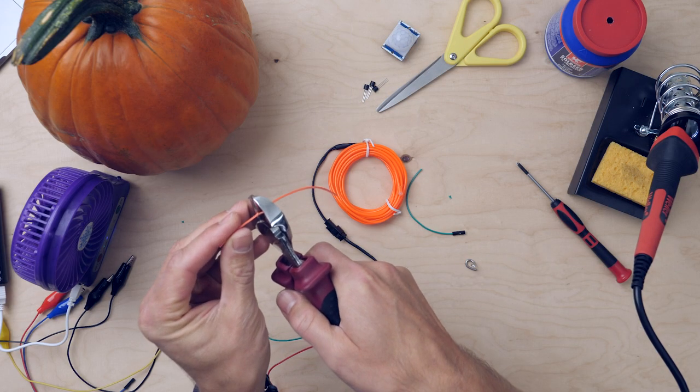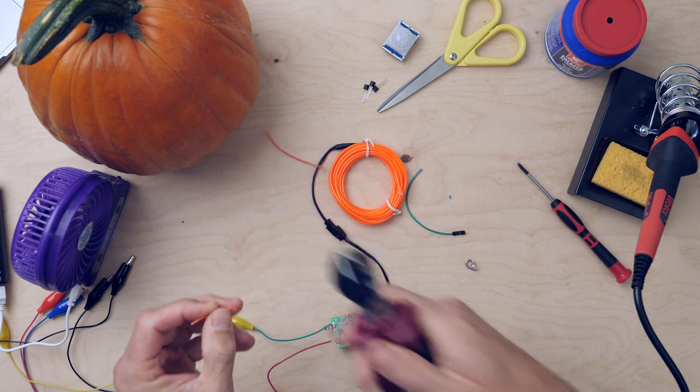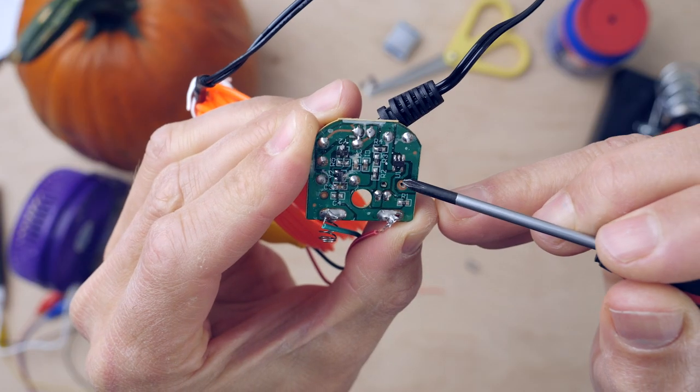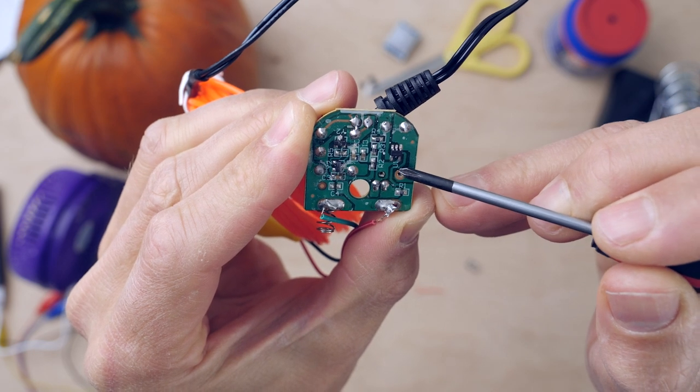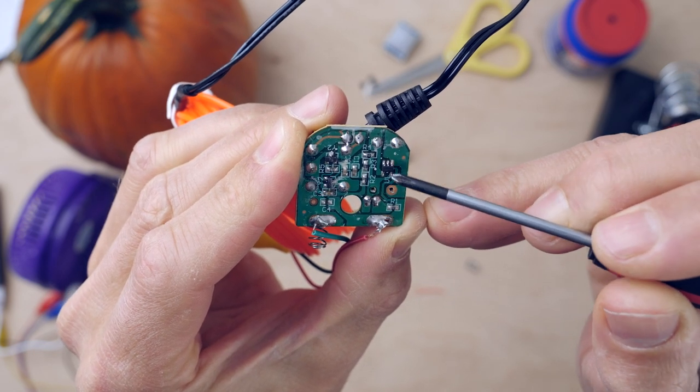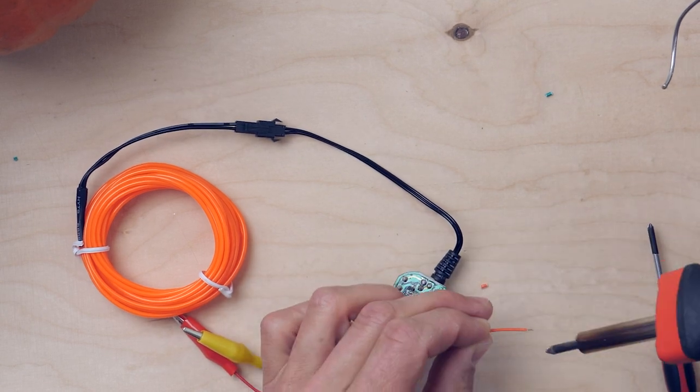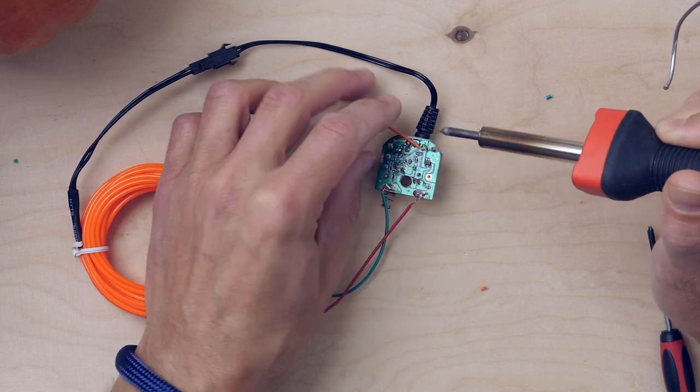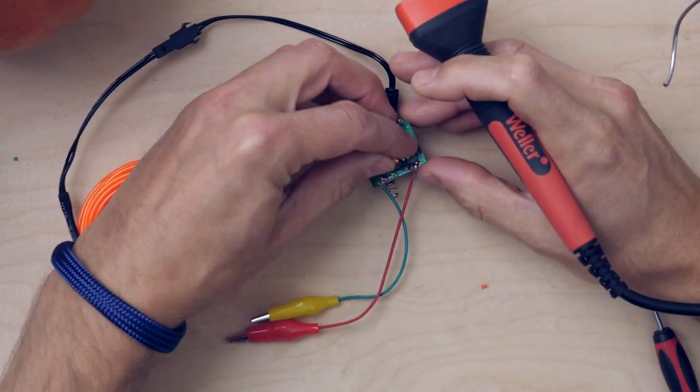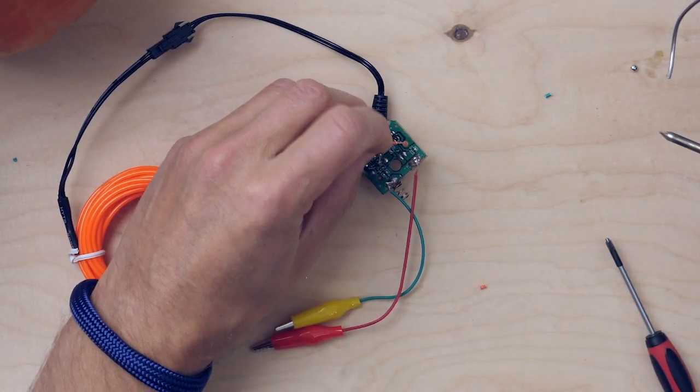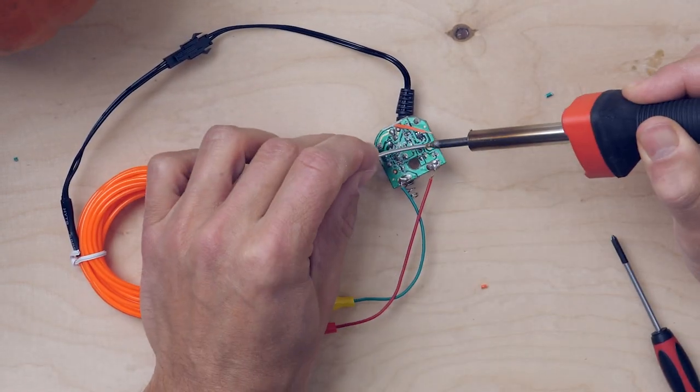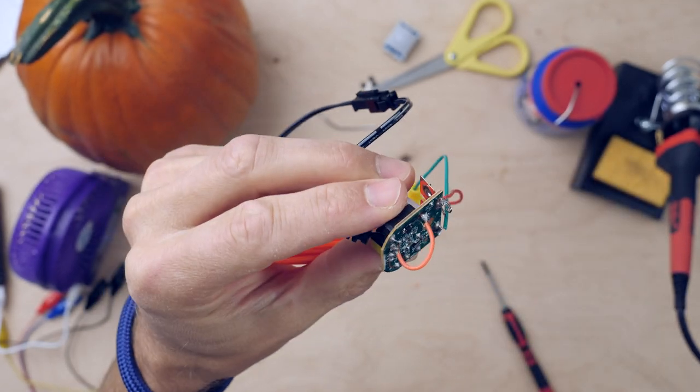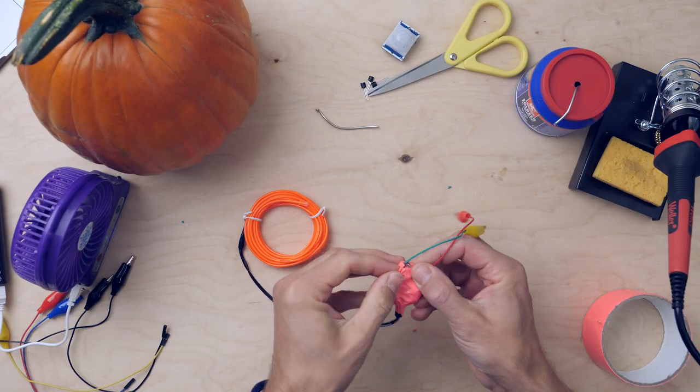My EL wire operation has a button to turn the EL wire on and off. I do not want to use this, the operation will be done via your Micro-Bit, so I solder a connection that bypasses the button. Then wrap the operation with tape.